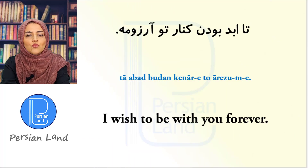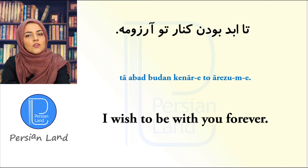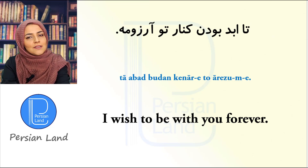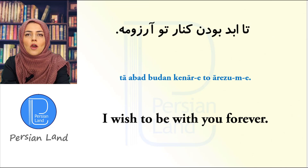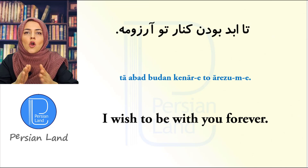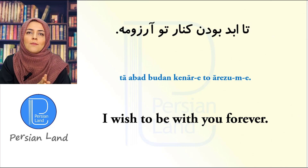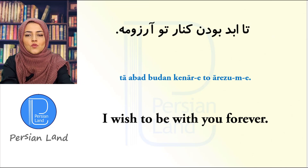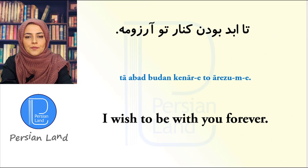تا ابد بودن کنار تو آرزومه. تا ابد means 'forever'. کنار تو means 'with you'. آرزومه is آرزویم است — 'it is my wish'.